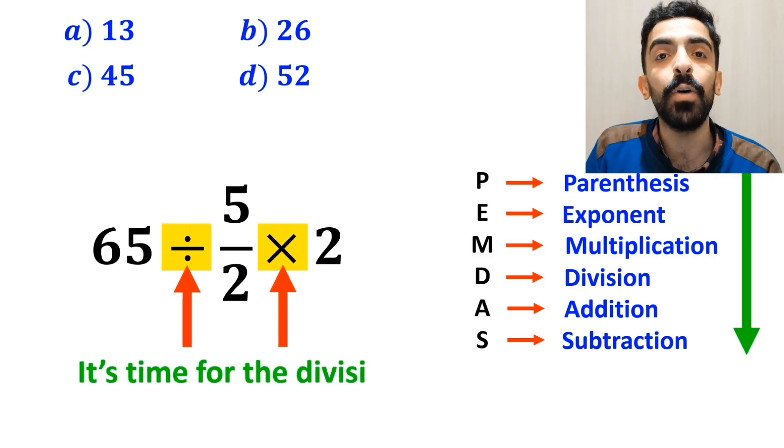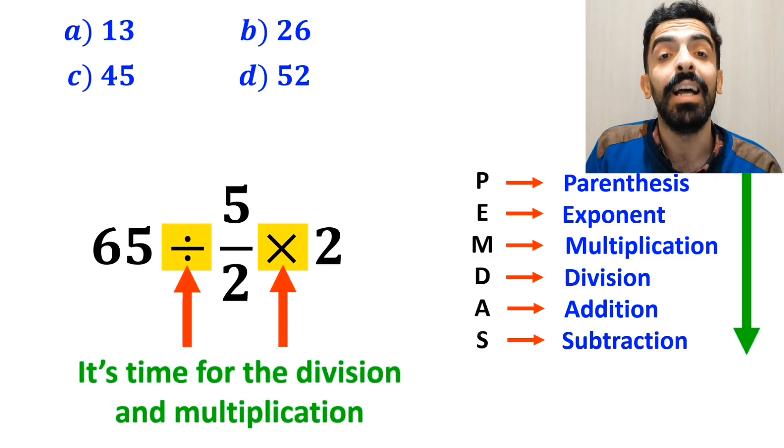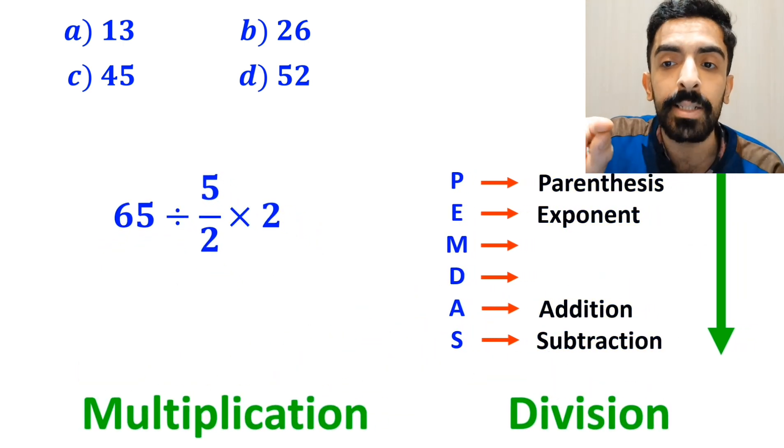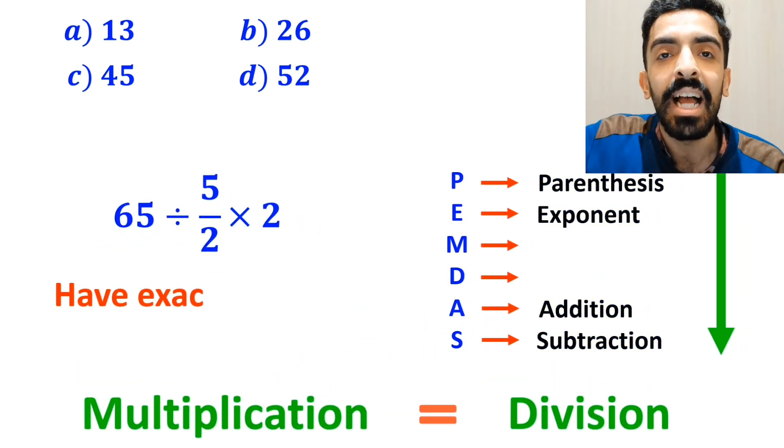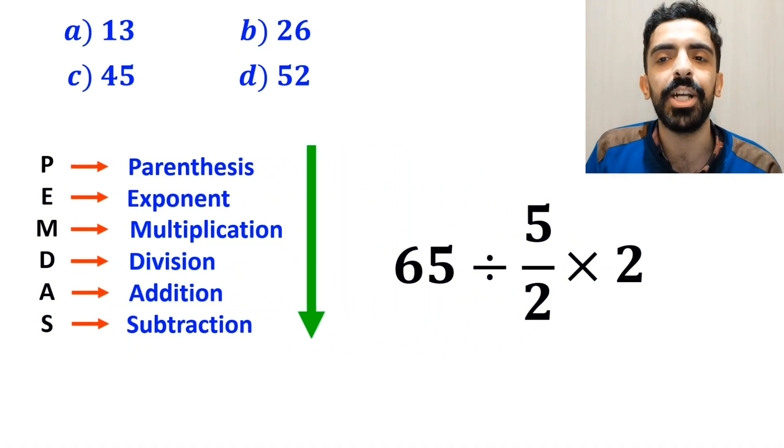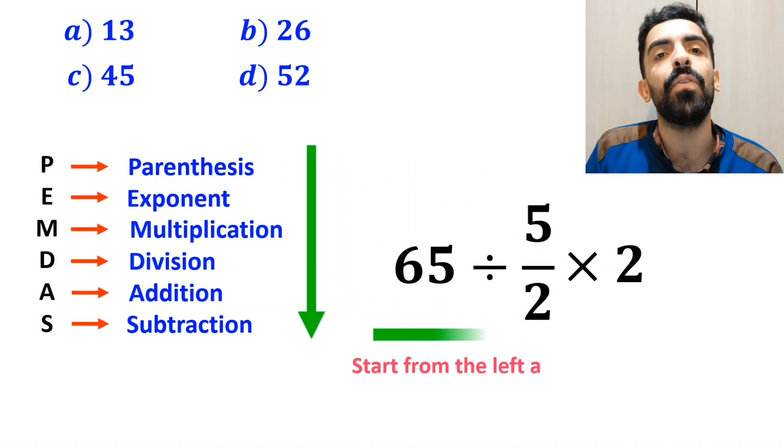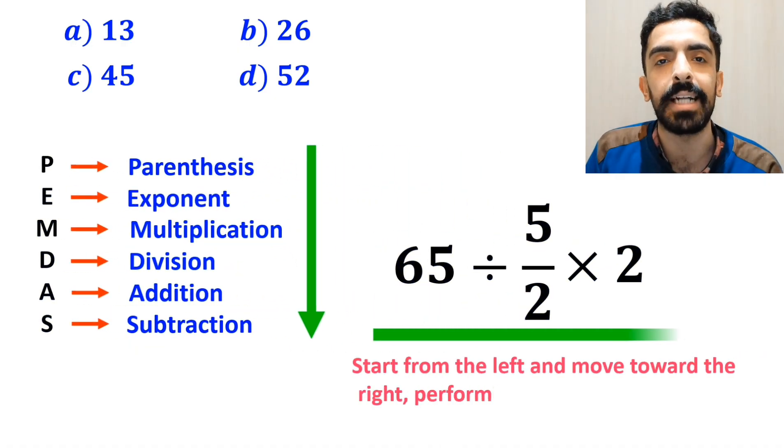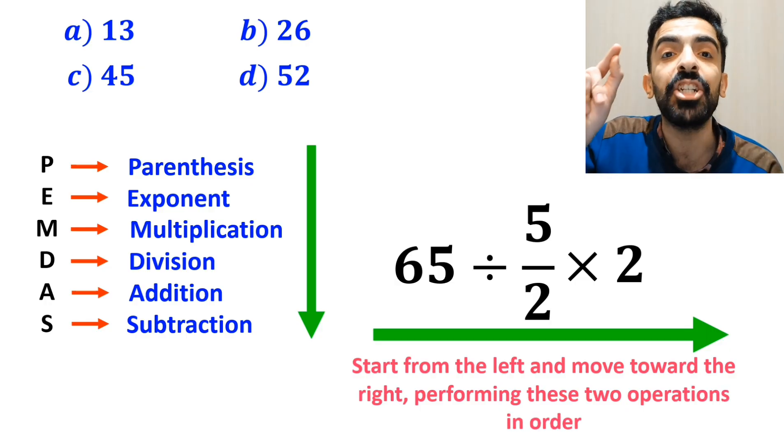Now it's time for the division and multiplication. However, it's very important to note that according to the PEMDAS rule, multiplication and division have exactly the same level of priority. In this situation, the best strategy is to start from the left and move toward the right, performing these two operations in order.